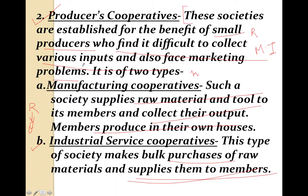In your commerce book, the producer cooperatives definition covers the main points, and you can mention the names of the two sub-types. If the question asks to describe manufacturing cooperatives specifically, then define it in detail. But if the question asks what is producer cooperatives, define the main concept and just write the names of the two types, as these two sub-types are least important for exam purposes.